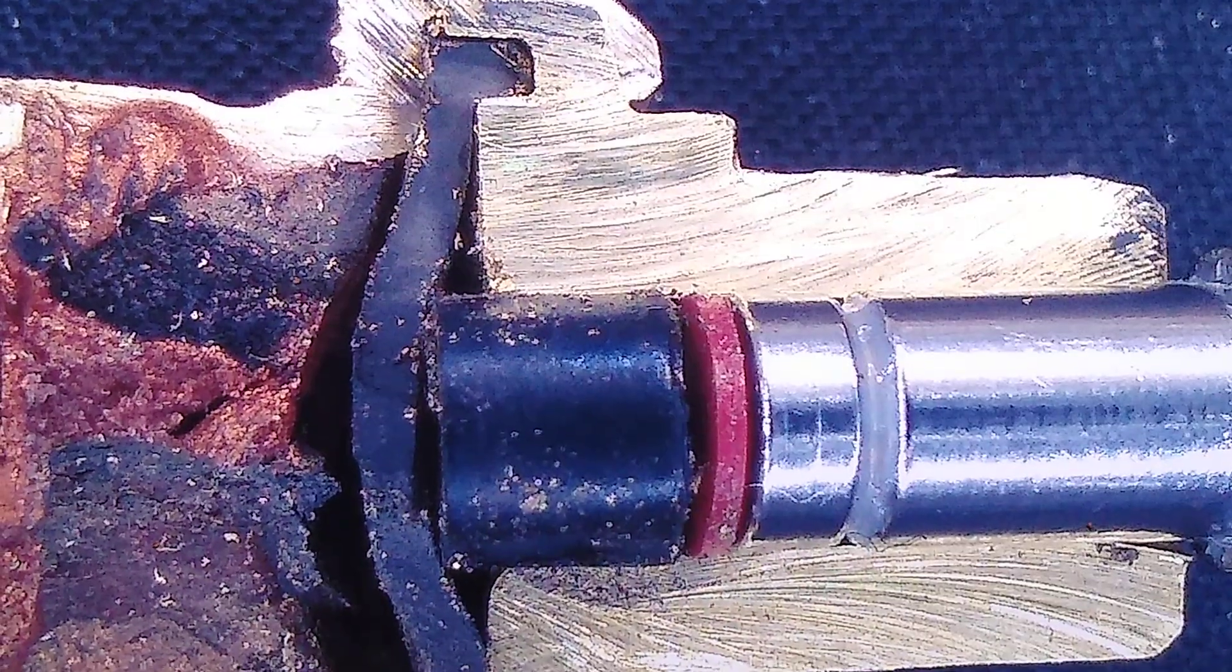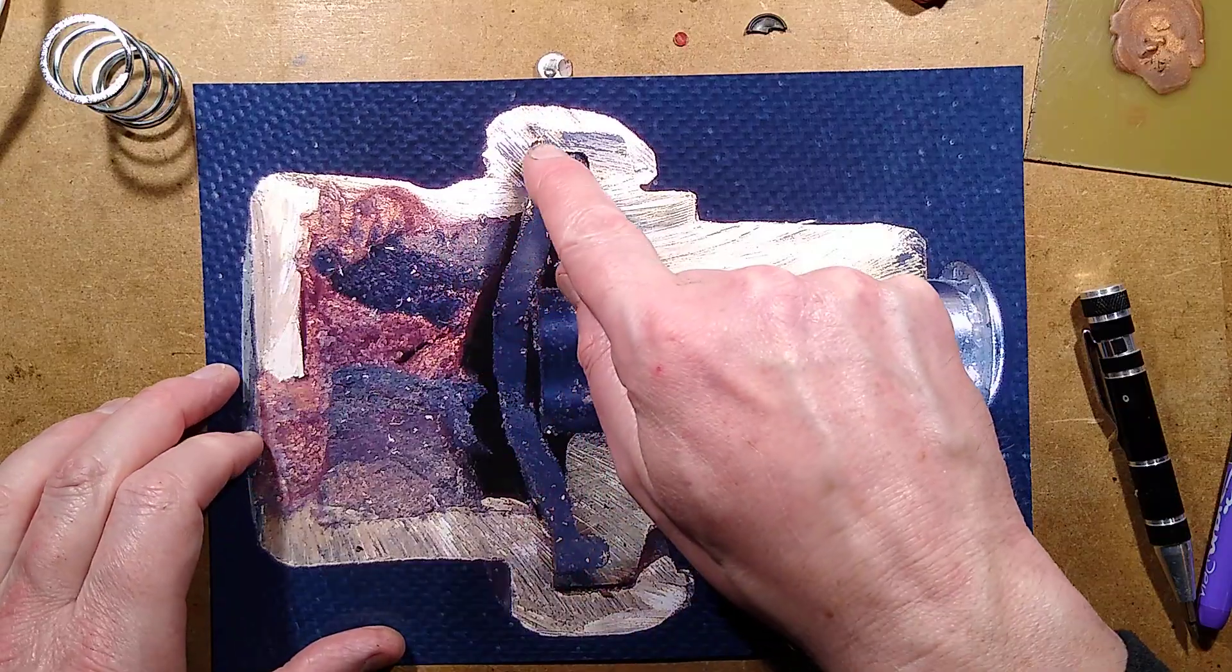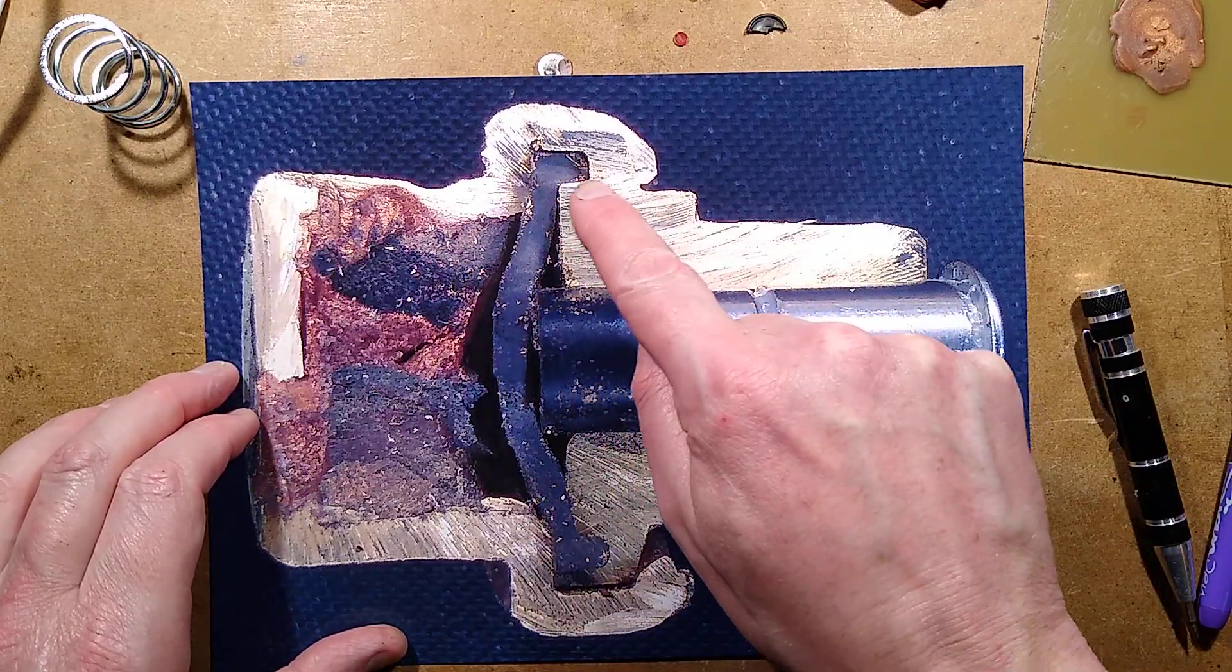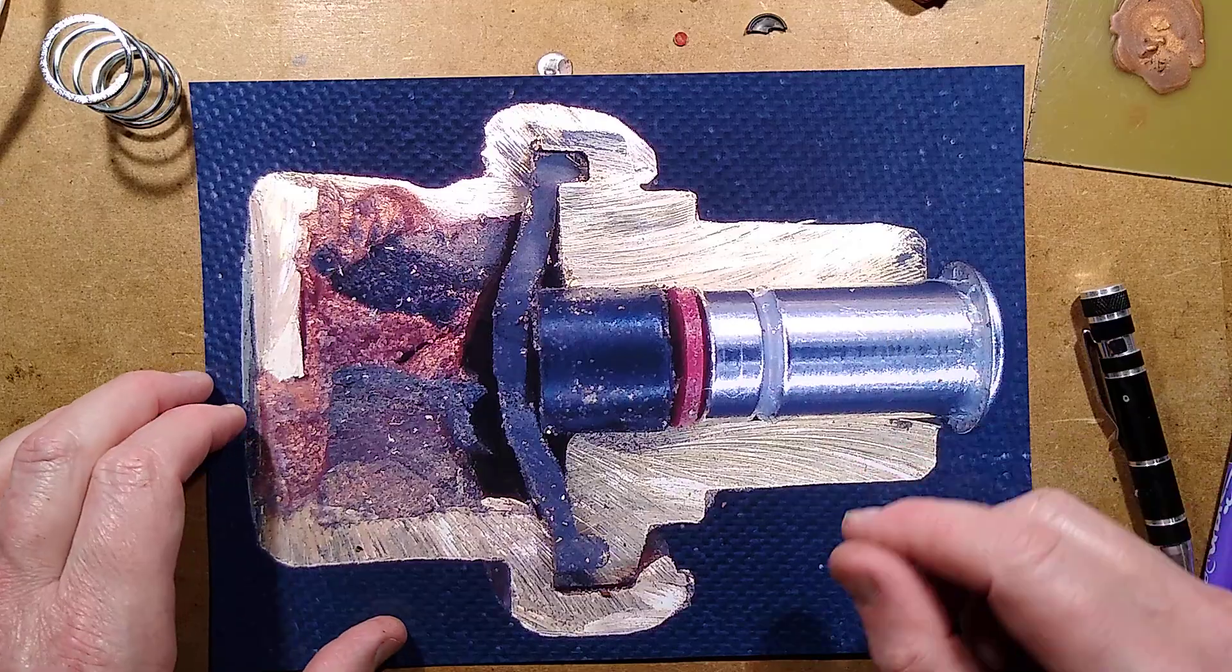But the other failure mode could be the wax gradually creeping out and just seeping out round the seam here or even down the cylinder and getting out the end.